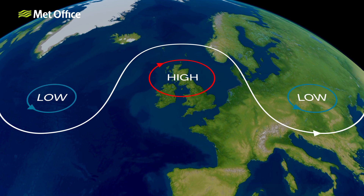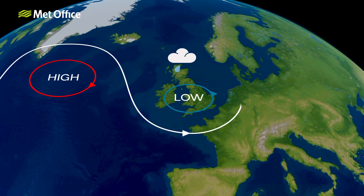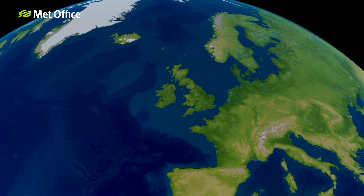With the high centred across the UK, we would typically see fine and settled weather and, depending on the time of year, perhaps some warmth too. However, if the high is centred to the west of the UK, we would draw in cold polar air, and a higher likelihood of wet weather.